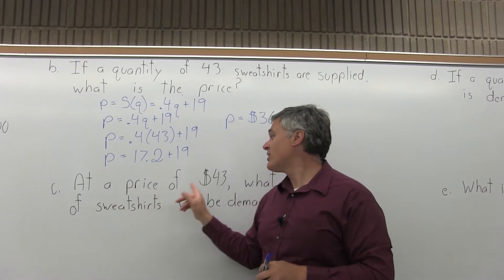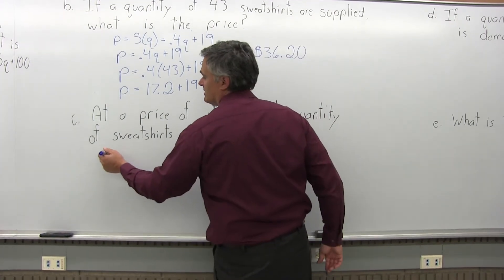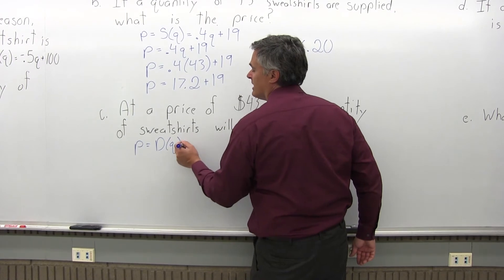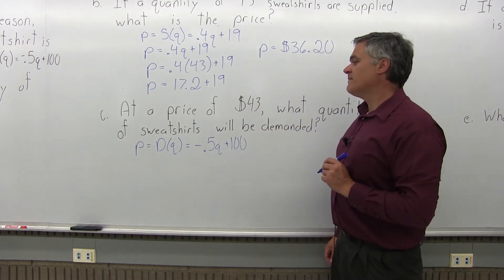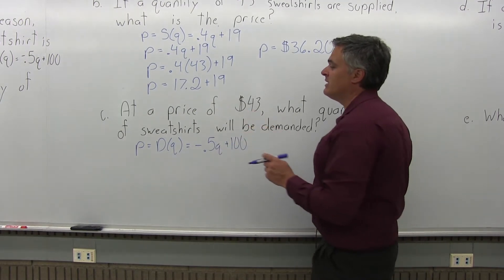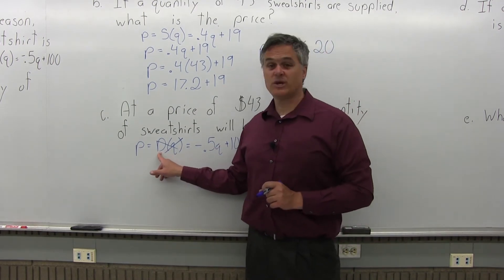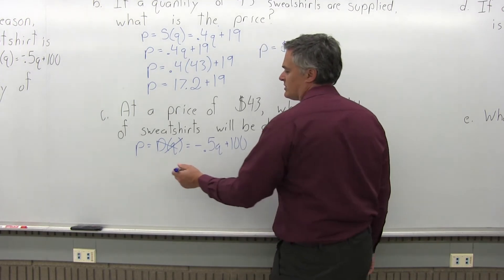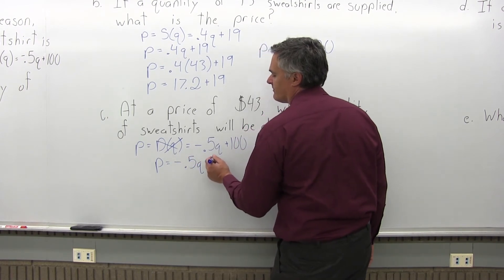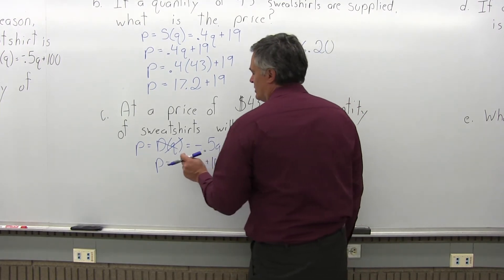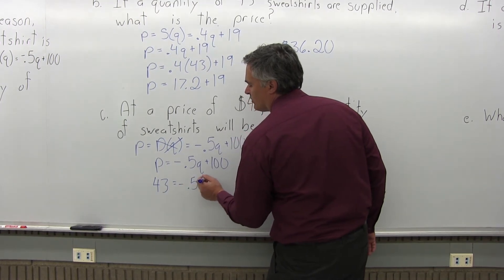Part C says: at a price of $43, what quantity of sweatshirts will be demanded? Now we're talking about demand, so we go to the demand equation, which is P equals negative .5Q plus 100. The 43 given is a price that goes in for P. I don't need to write D(Q) — that's written in the given information to distinguish supply from demand. Don't lose that negative .5; that makes a big difference. So it becomes 43 equals negative .5Q plus 100.